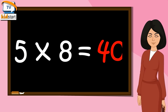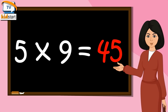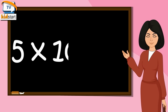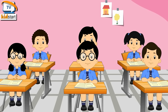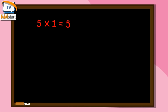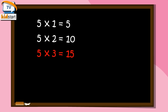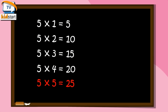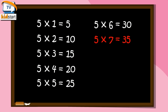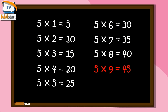Five eights are forty. Five nines are forty-five. Five tens are fifty. Five ones are five. Five twos are ten. Five threes are fifteen. Five fours are twenty. Five fives are twenty-five. Five sixes are thirty. Five sevens are thirty-five. Five eights are forty. Five nines are forty-five. Five tens are fifty.